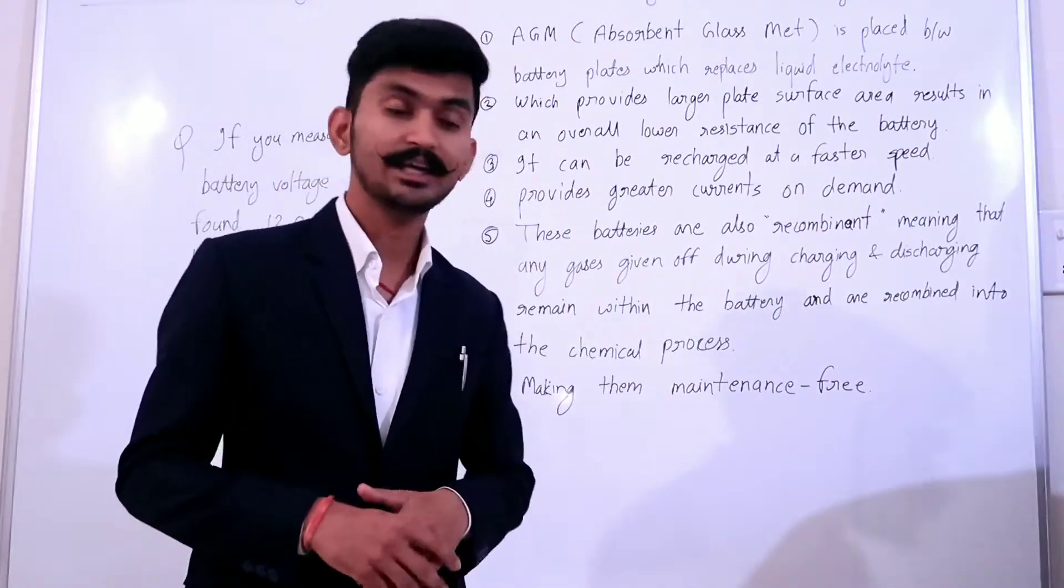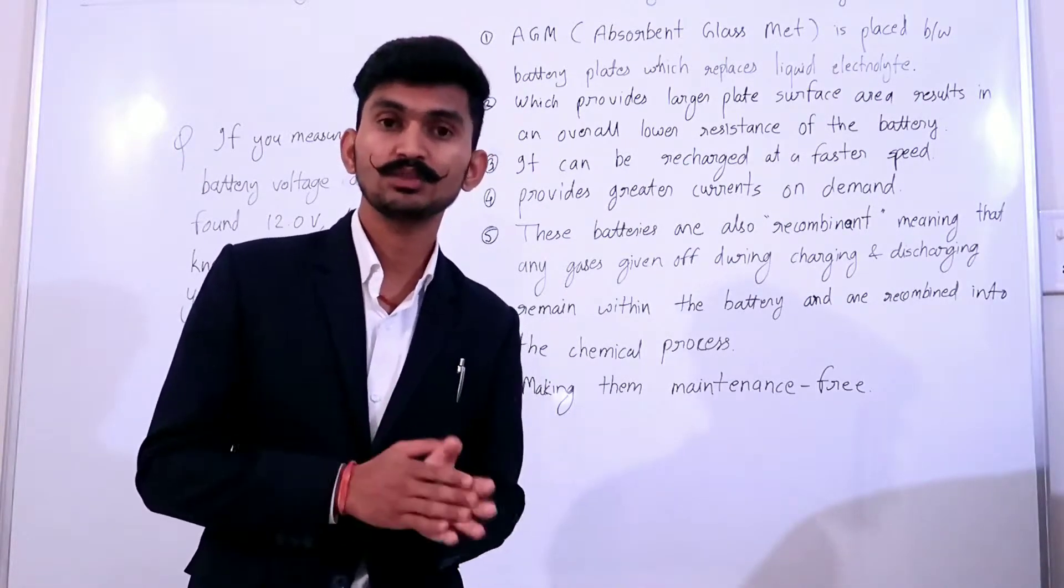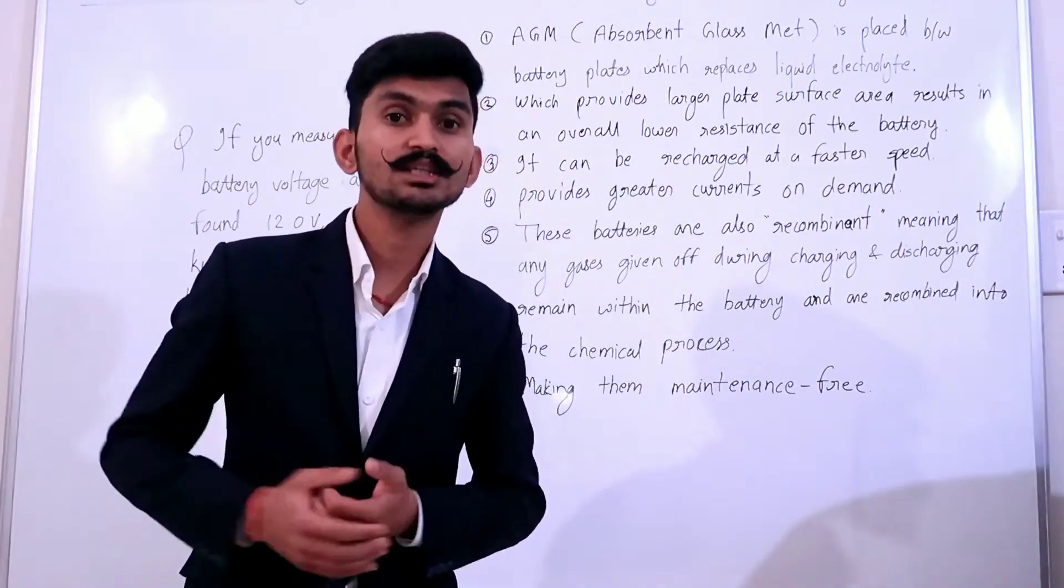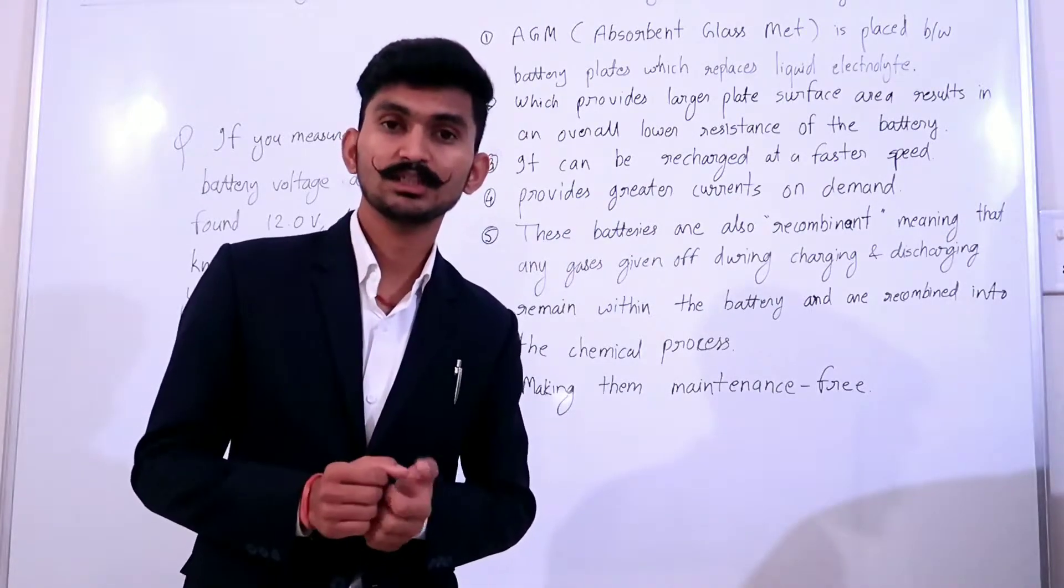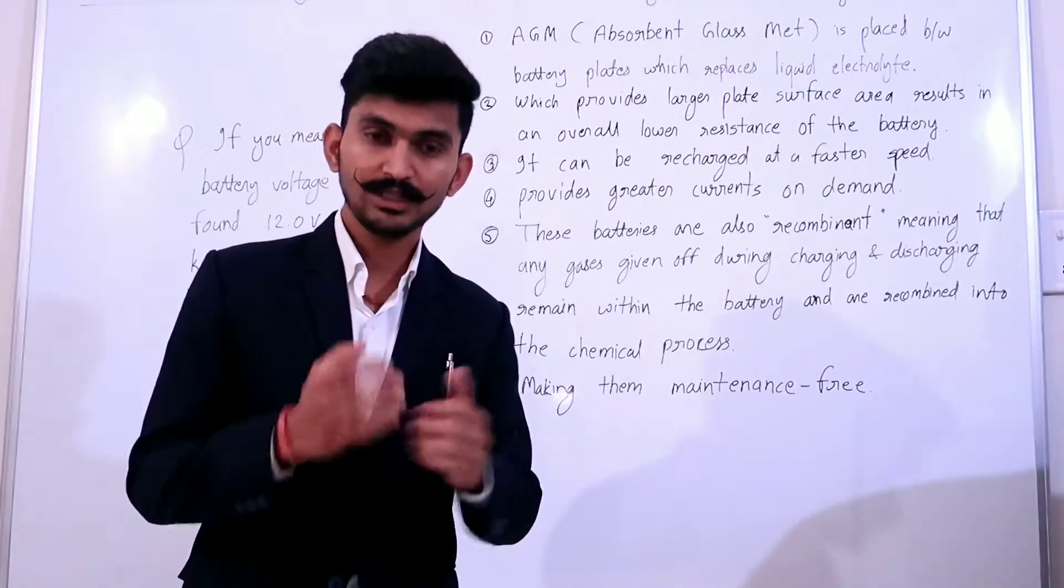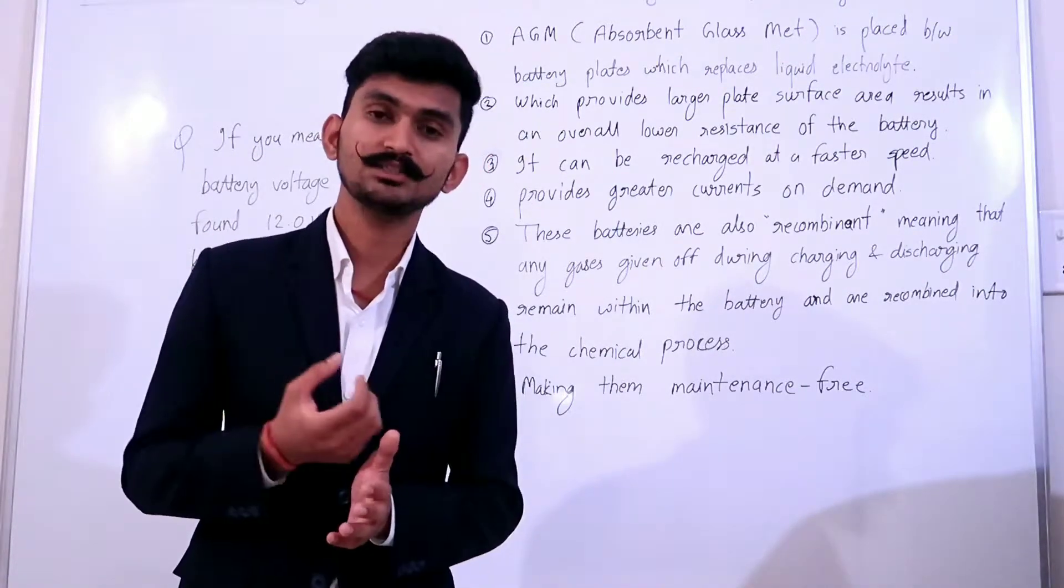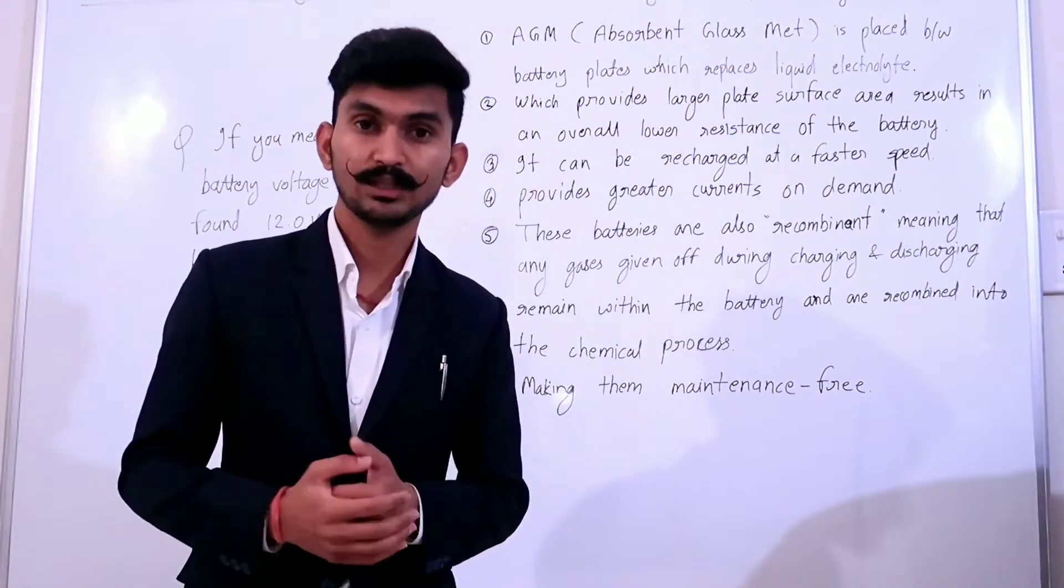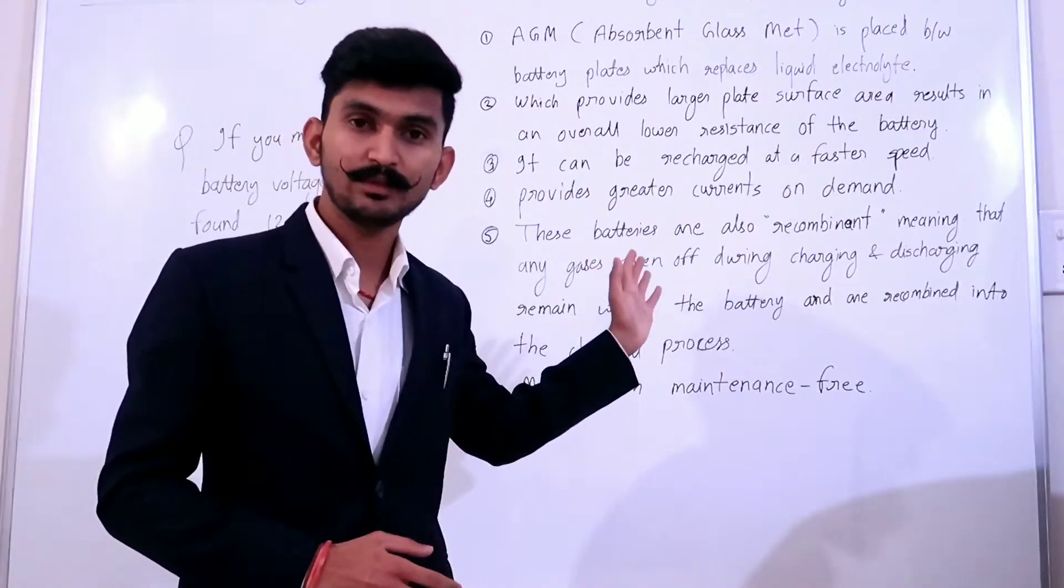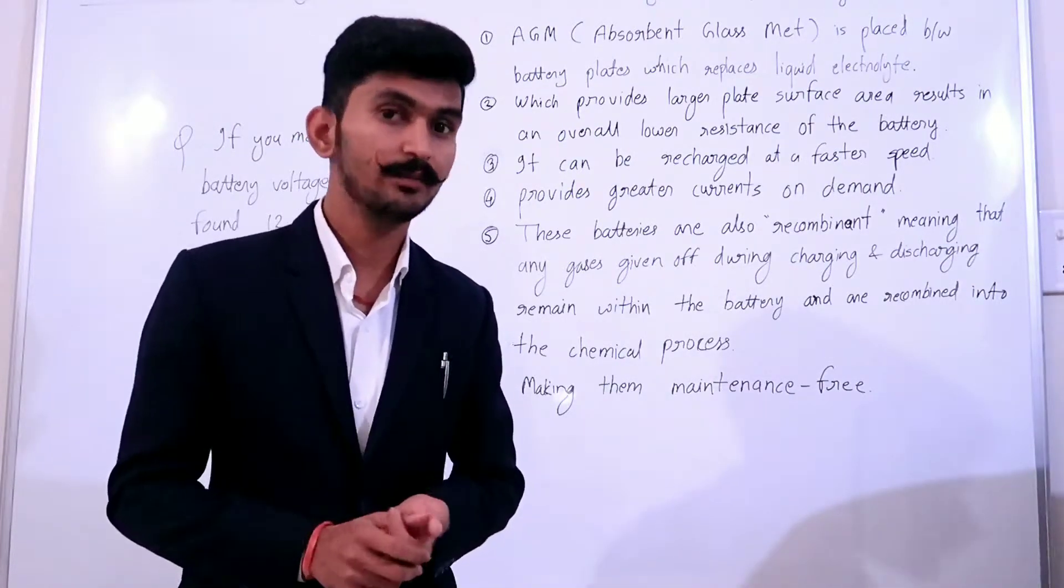Next, provides greater current on demand. When the battery requires much more current, like in starting the car, the current comes from the battery instantly. I had told you that normal batteries get warm because there is a lot of current flow. In AGM case, this is not happening because AGM can supply higher current on demand. Fifth,